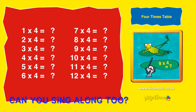Nine times four is thirty-six. Ten times four is forty. Eleven times four is forty-four. Twelve times four is forty-eight.